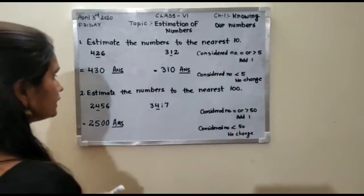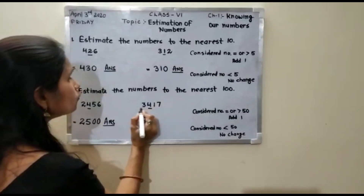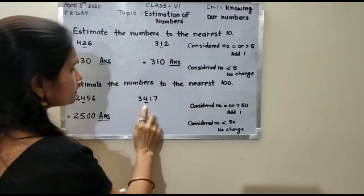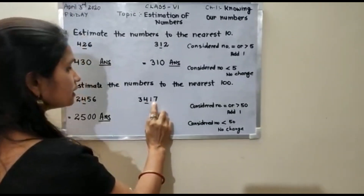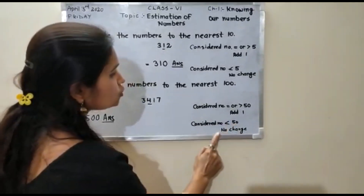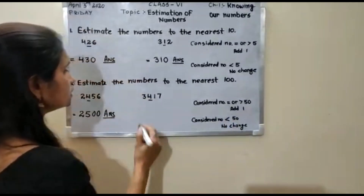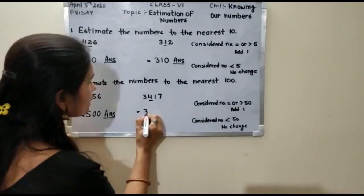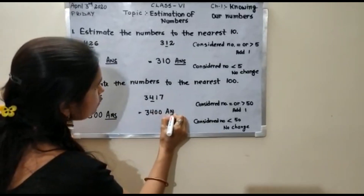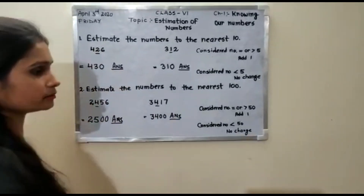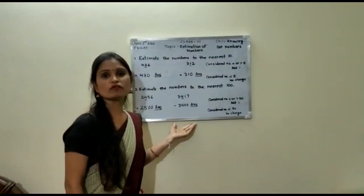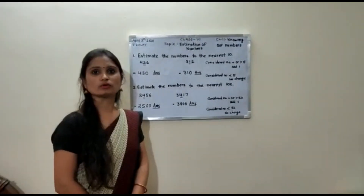Next question: 2417 to the nearest hundred — underline the hundreds place, which is 4. Your considered number is 17. Since 17 is less than 50, there will be no change. So 4 will remain 4, and the answer is 2400. Now try to solve such types of questions in your notebook. Thank you.